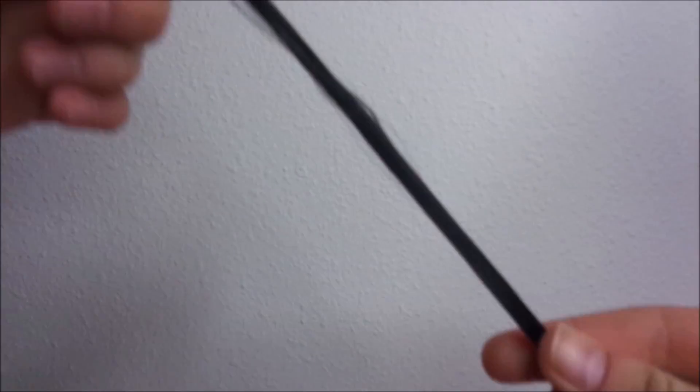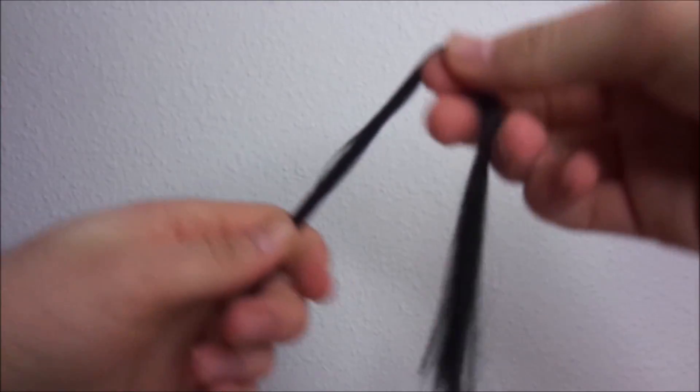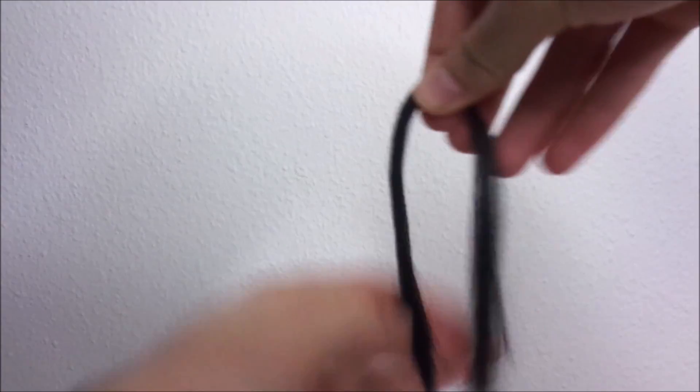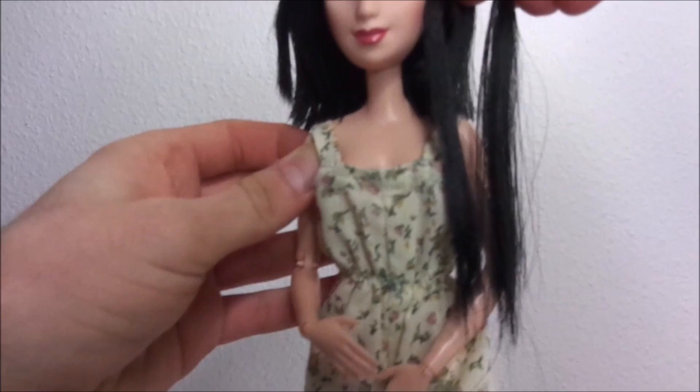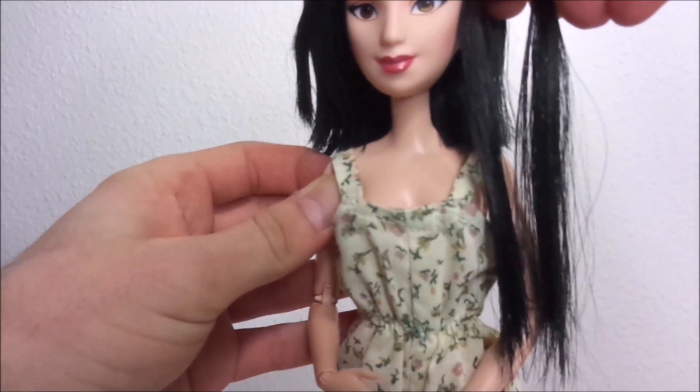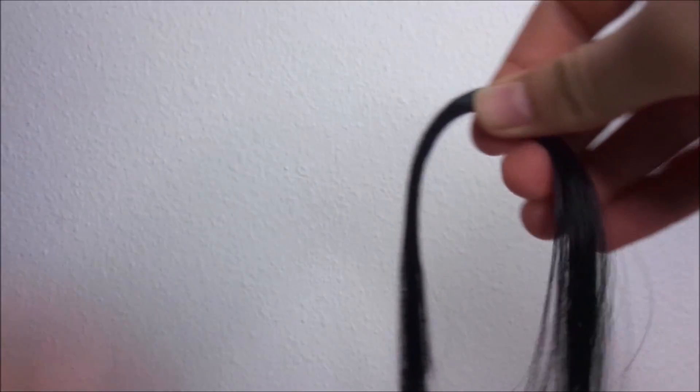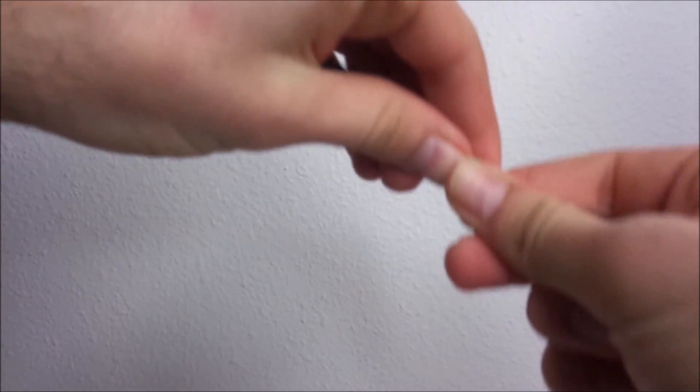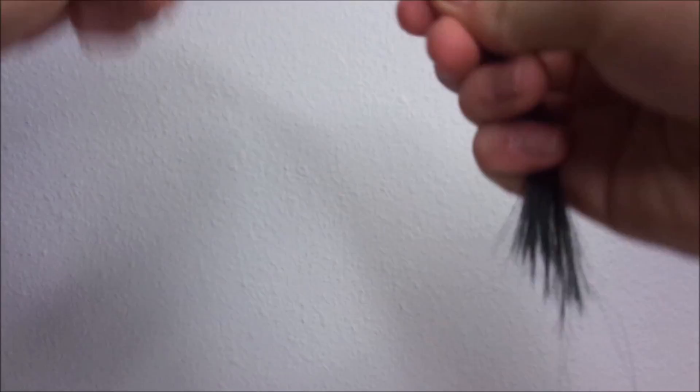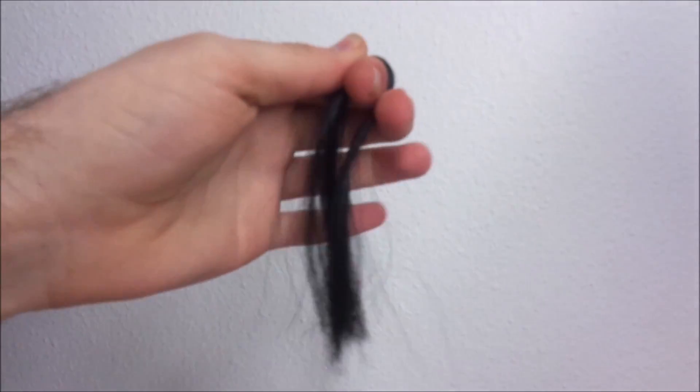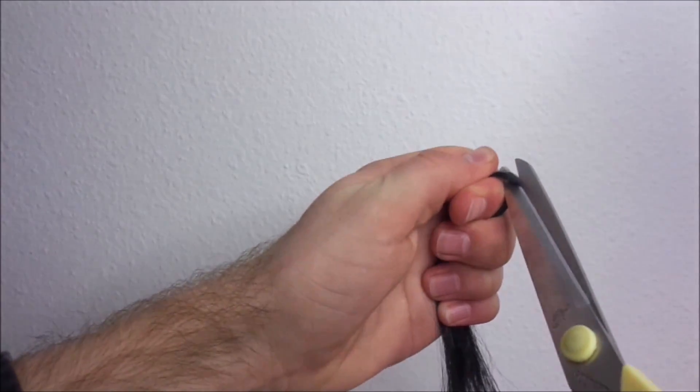To start creating the extensions, take a small strand of hair and decide how long you want the extensions to be. For Mulan I didn't want the extensions to be too long so I used the length when it's folded in half. But if you want it longer you simply don't cut it. For me, I cut the strands in half creating that shorter strand.